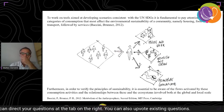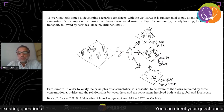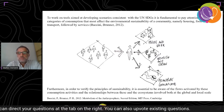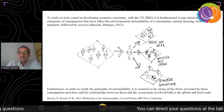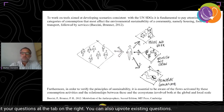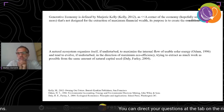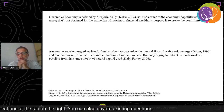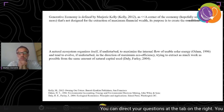Working on tools to develop scenarios compatible with the SDGs requires paying attention to the categories of consumption that most affect environmental sustainability in a community — namely housing, food, and transport, followed by services. To verify sustainability principles, it is essential to be aware of the flows activated by these consumption activities and their relationship with ecosystems at both global and local scales. The specific field of generative economy offers interesting ideas to keep a systemic vision active in developing project proposals.